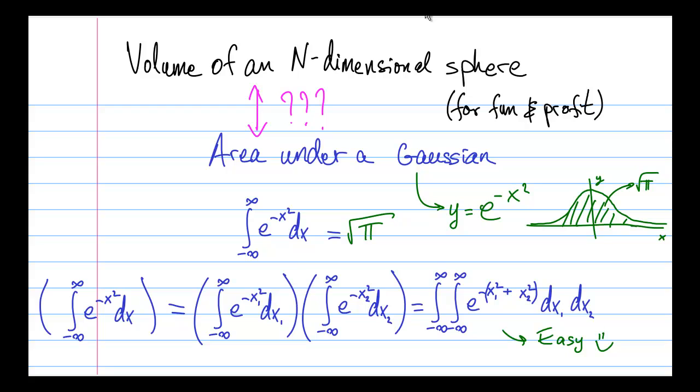And then we can generalize to n. So, re-running the same exact procedure in 3 dimensions, what we do is we say we have this one-dimensional integral that we don't really know how to solve.